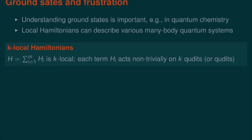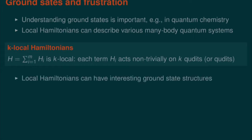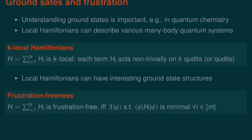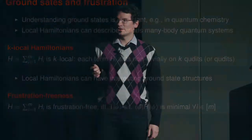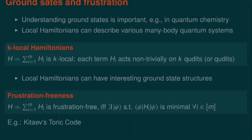For the rest of the talk, I will talk about qubits, but all results generalize to qudits as well. These local Hamiltonians can have very interesting ground state structures, and one interesting property is frustration-freeness, which means that there is a so-called frustration-free state which minimizes the energy of all local terms simultaneously. This is a very special form for a ground state, and there are lots of examples — for example, the Kitaev surface code is frustration-free.